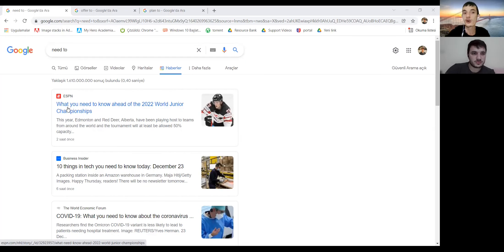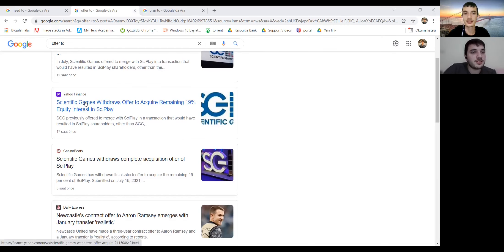Okay, nice. So right now we are going to check some verbs together on Google. See the examples. What you need to know ahead of 2022, etc. Or another example, let's read. Can you read this example for me? Scientific Games withdrawals offer to acquire remaining 19 percent equity interest in SciPlay.